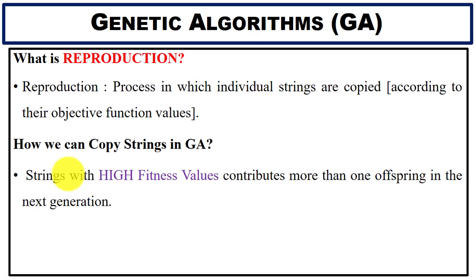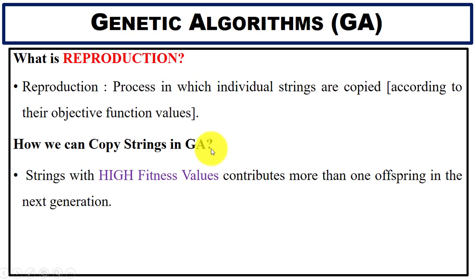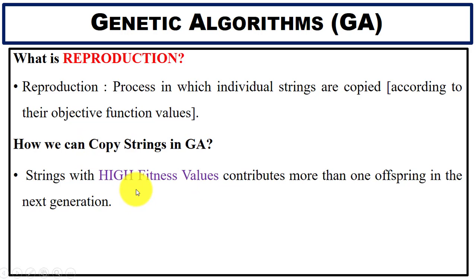Reproduction is the process in which individual strings are copied according to their objective function values, that is, the fitness value. We select or copy strings with high fitness values. If the fitness value is high, the string can contribute one or more copies in the next generation.